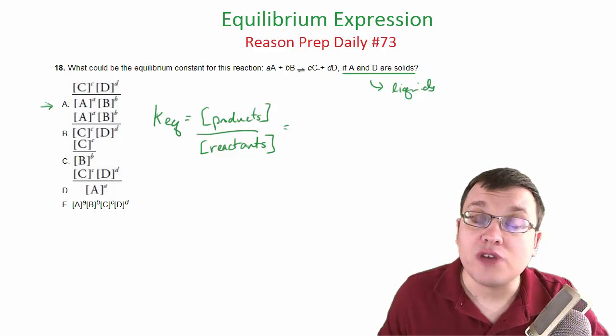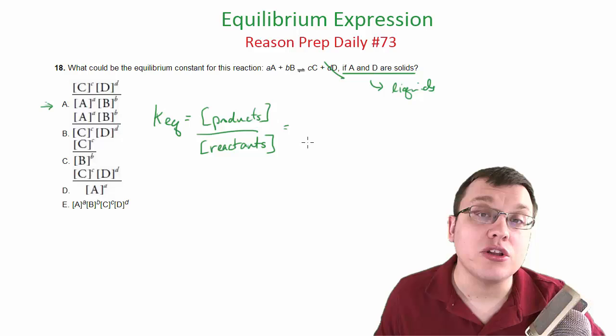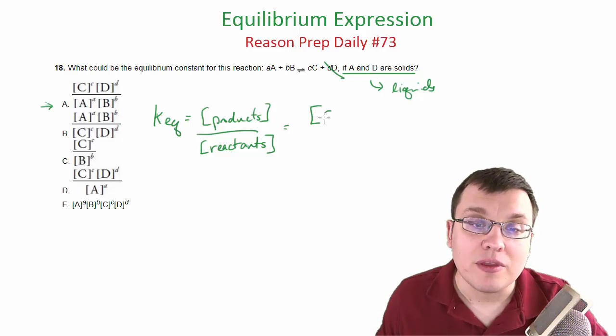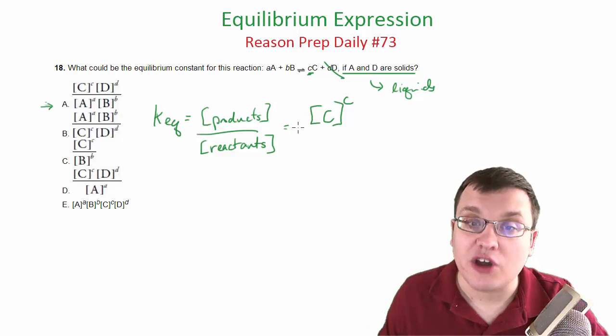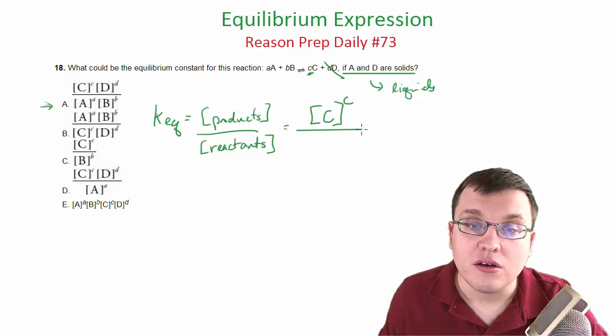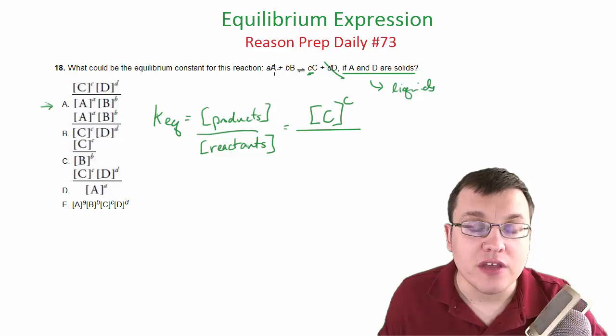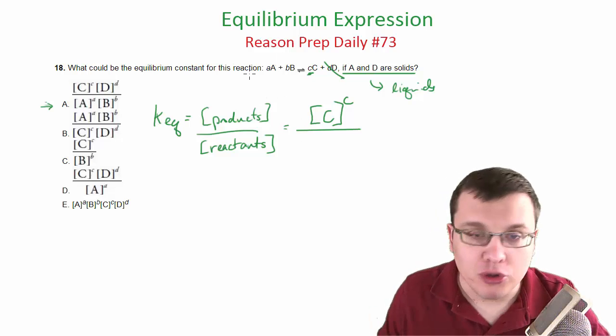So in this case, it's going to be the concentration of the products. D we do not include because it's a solid. So it's going to be the concentration of C to the C power. You raise it to the coefficient of the equation, of the element, in this case, or the molecule, whatever it is.